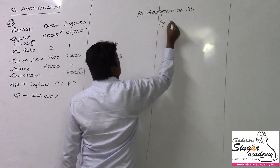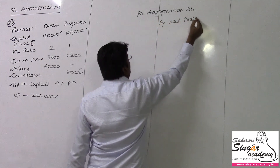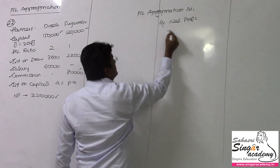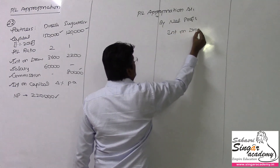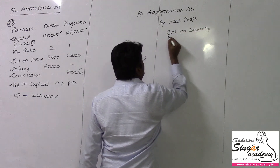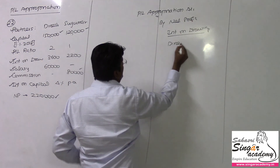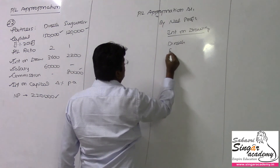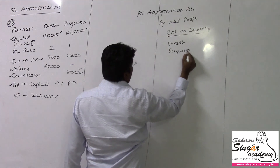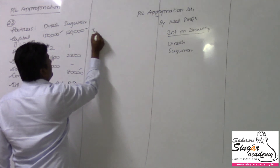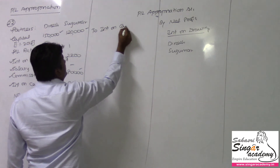In the P&L Appropriation Account, on the credit side, we record: net profit transferred from P&L account. Then interest on drawings for both partners — Dinesh and Sugumar. On the debit side, we record interest on capital for Dinesh and Sugumar.